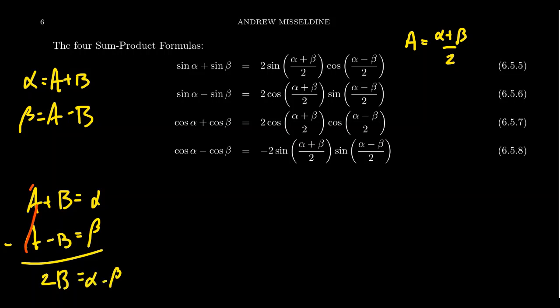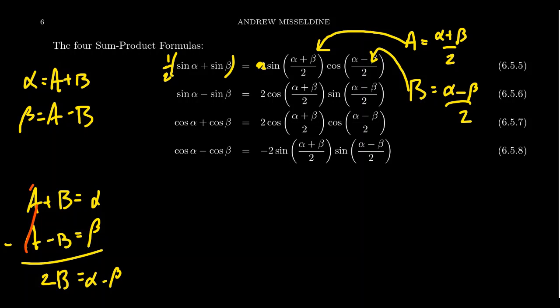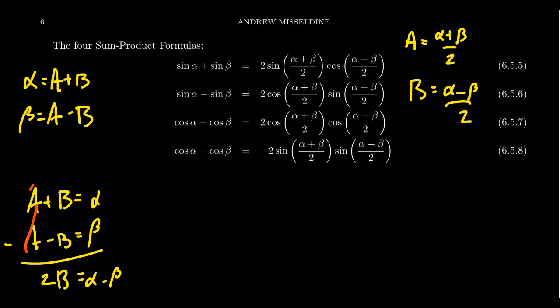So b equals (alpha minus beta) over 2. You then take this interpretation of a and this interpretation of b and substitute them into the product-to-sum formulas. For example, the first product-to-sum identity is: sine of a times cosine of b equals one-half times [sine of (a+b) plus sine of (a−b)]. With this change of angles you can see that the sum-to-product identities are just the product-to-sum identities viewed from a different perspective.